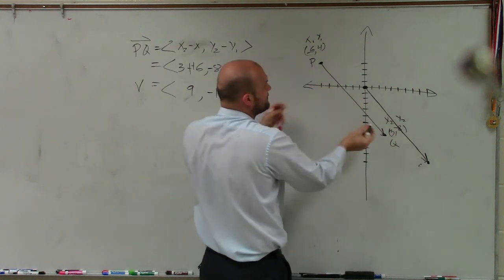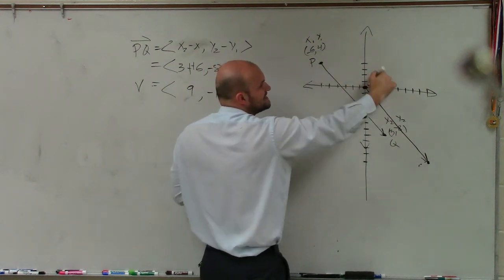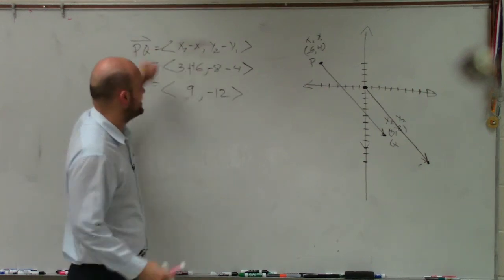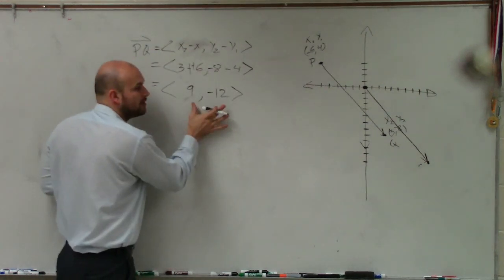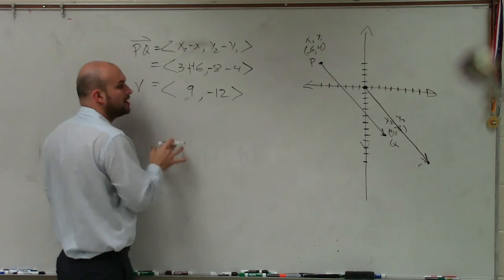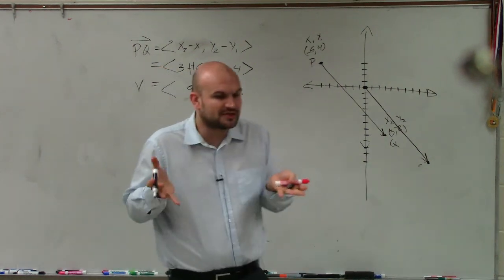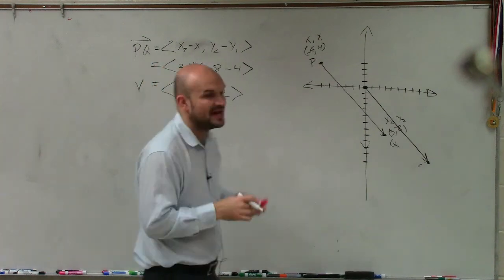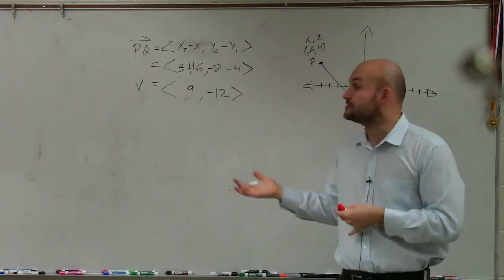These should be parallel. But the only difference is P, that initial point, is now at 0, 0. So by following this formula, what I do is I just find a vector that's in this component form that's going to be our standard kind of form that we're going to use when working with vectors.